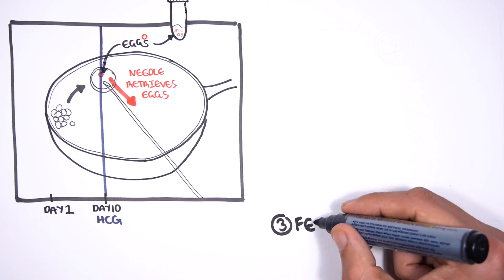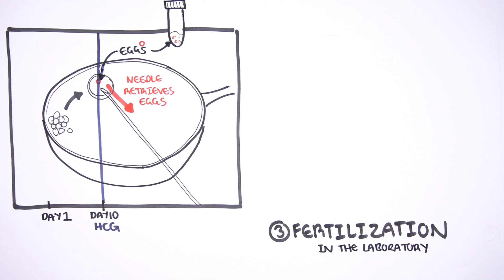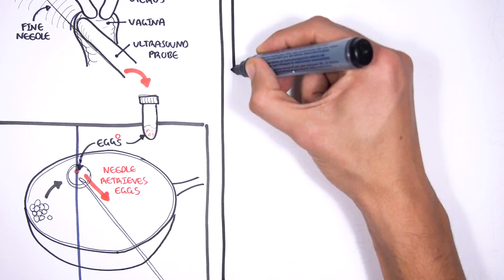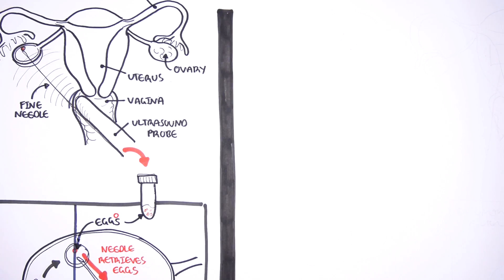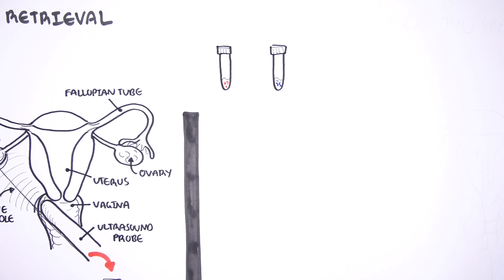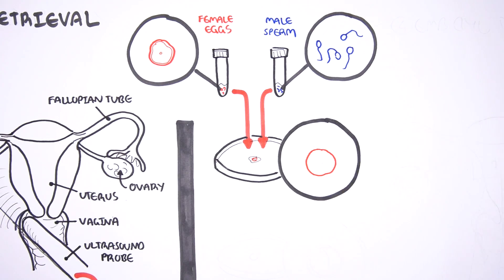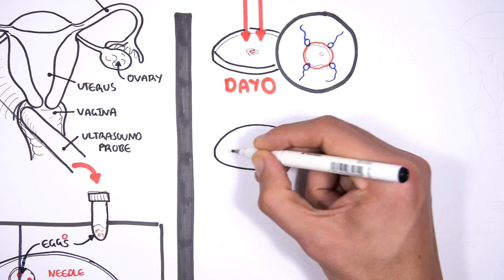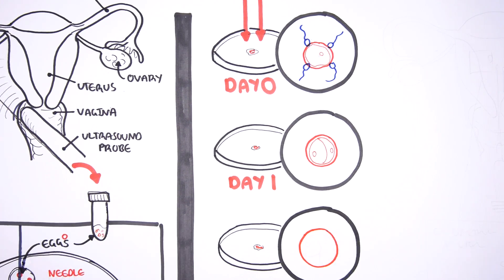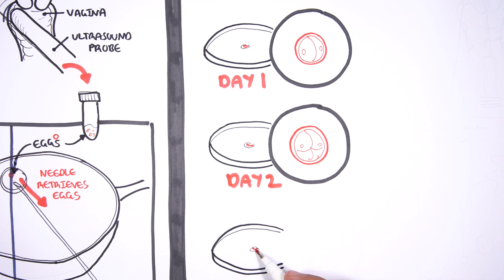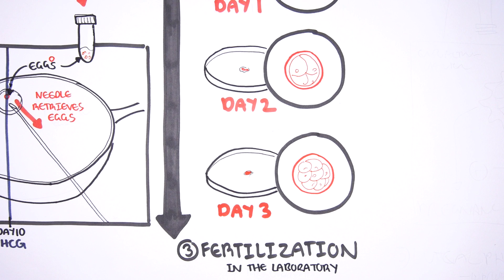This brings us to the third step of in vitro fertilization, which is fertilization, and fertilization here occurs in the laboratory. The oocytes which have been retrieved are fertilized with the male sperm collected — this is day 0. By day 1, the first cell divisions take place in the laboratory. Cell division continues, and by day 3–5, the embryos will be transferred back into the uterus.